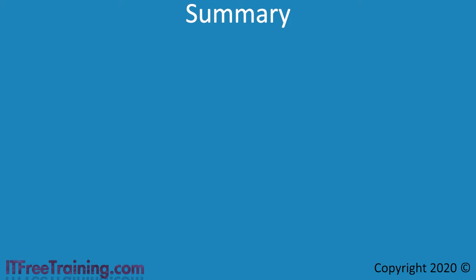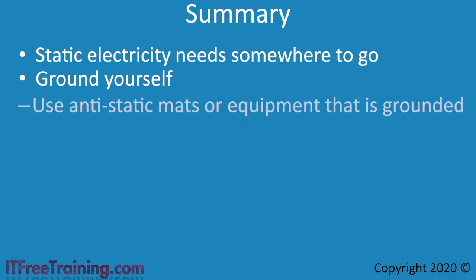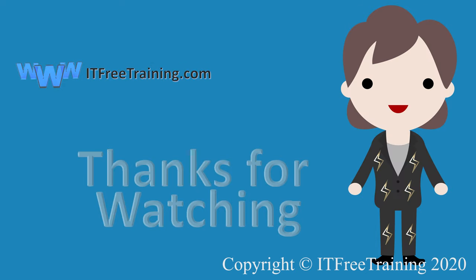To end this video, I will do a summary of the major points. Remember, static electricity needs somewhere to go — you need to create a circuit connected to ground for static electricity to go along. The easiest way to do this is to ground yourself, using anti-static mats or equipment that is grounded. For example, before touching a component, touch the computer case or a grounded table — this will remove any static electricity that you may have accumulated. When you are storing or moving components, place them in an anti-static bag. This will help to protect the components from being damaged. Electrical components are more resilient to static electricity than they used to be; however, even a small charge to a component may reduce the lifespan of that component. I hope you have enjoyed this video from ITFreeTraining and found it informative. Until the next video from us, I would like to thank you for watching.